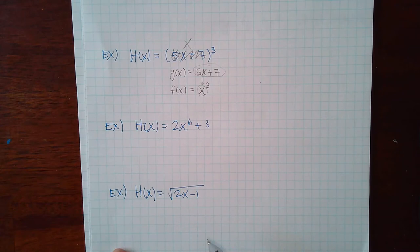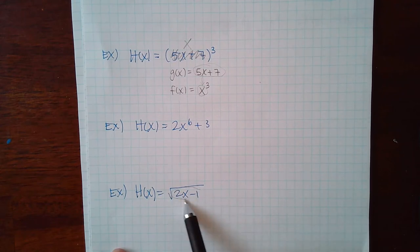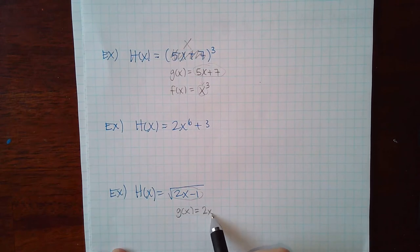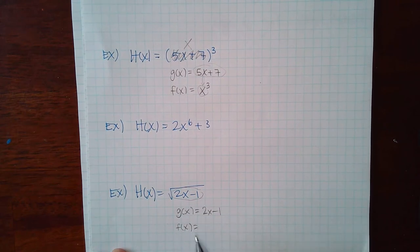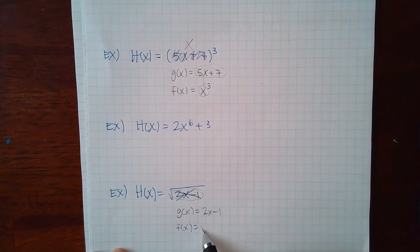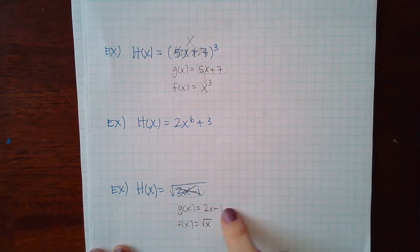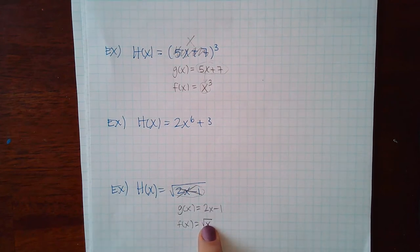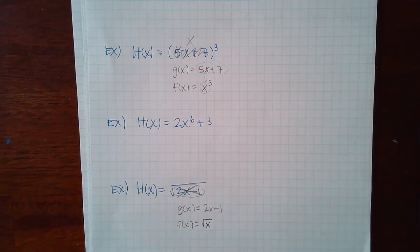Similarly, for √(2x−1): the inside of the square root is the grouping mechanism, so g(x) = 2x−1 and f(x) = √x. Plugging g into f recovers the original h(x). These examples with explicit grouping are the easier ones to identify.